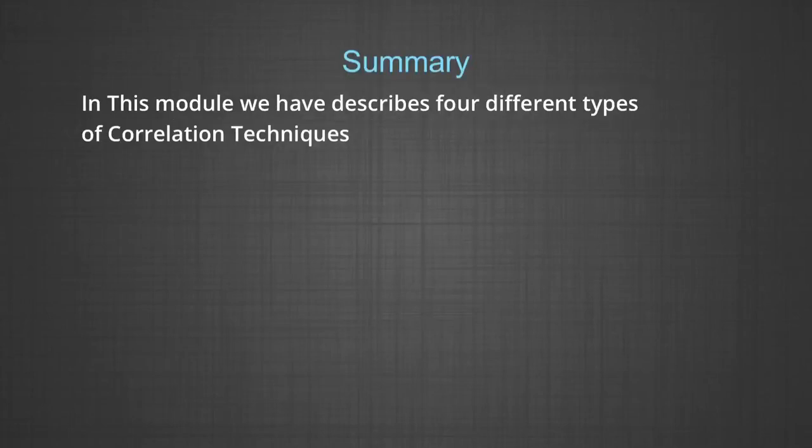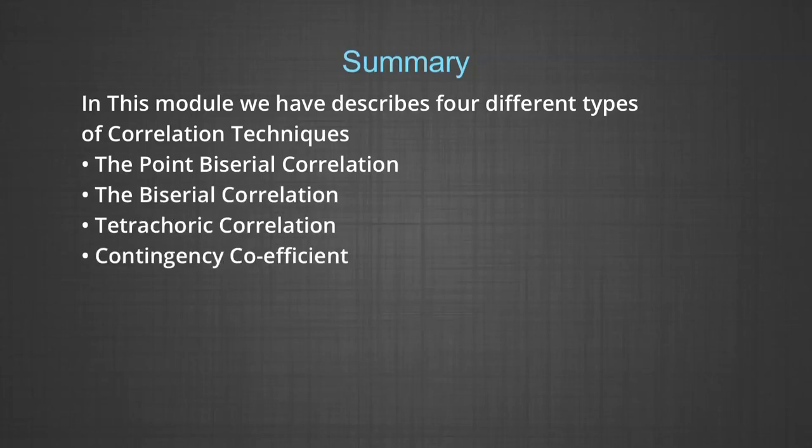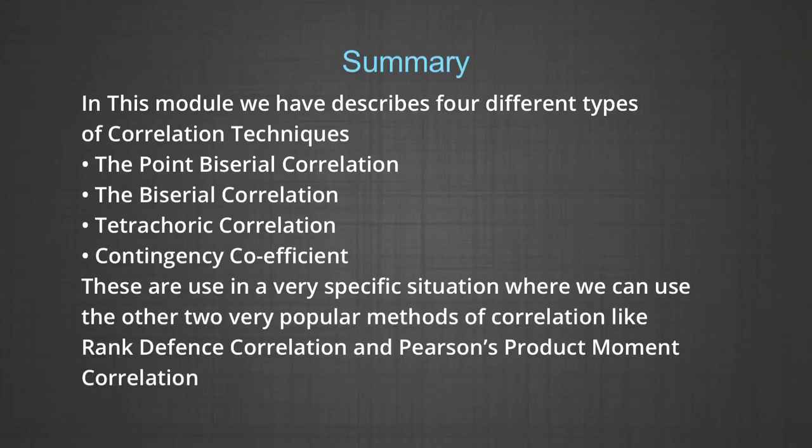In this module, we have described four different types of correlation techniques: biserial, point biserial, tetrachoric, and phi coefficient. These are used in very specific situations where we cannot use the other two very popular methods of correlation like rank difference correlation and Pearson product moment correlation. These are very useful in research, especially when we do test construction and other types of work in our research. Thank you very much.